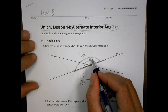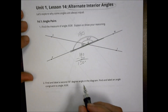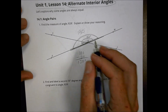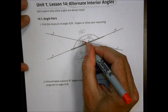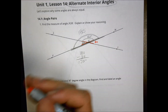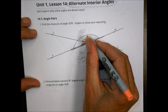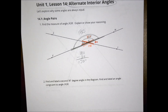So JGH is 150 degrees. Next, find and label a second 30-degree angle, and find an angle congruent to JGH. To do that, we look at vertical angles — straight across from another. The vertical angle would be 30 degrees right there, and over here for JGH, if this is 150 then straight across is also 150 degrees.